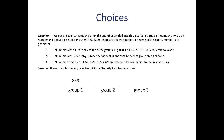The second group is a little easier to work with. The only exclusion is that it can't be 00, which means it can be any number from 01 to 99, so there are 99 possible choices for that position. For the third number, the only rule that applies is excluding 0000, which leaves us with anything from 0001 to 9999 — that's 9,999 possible choices.